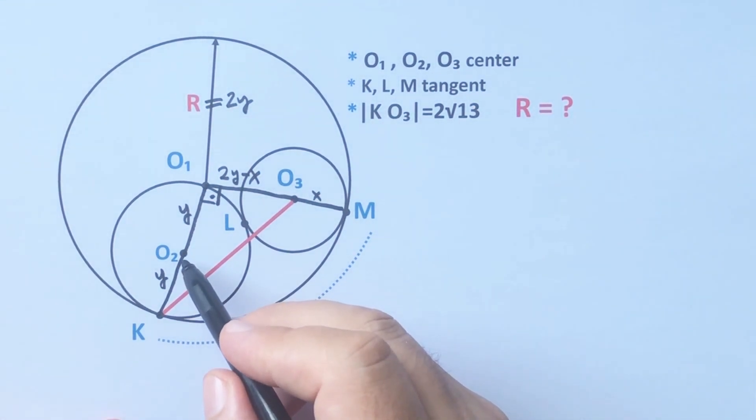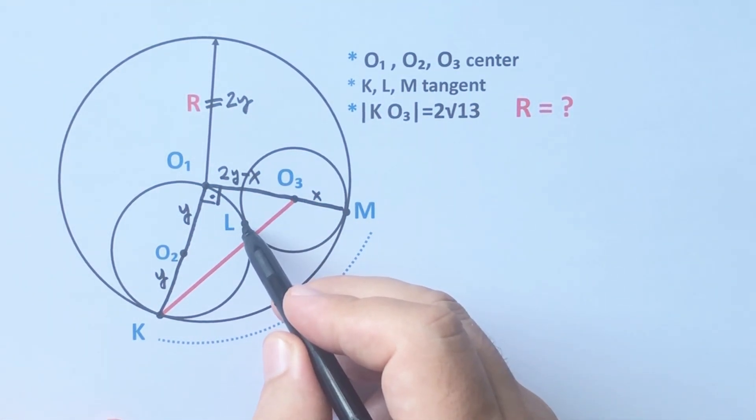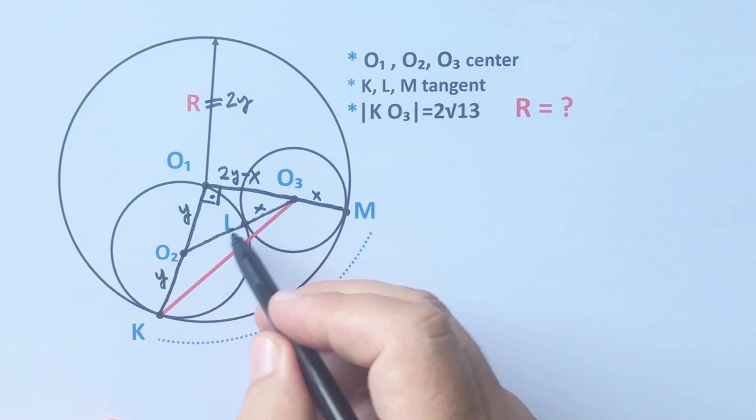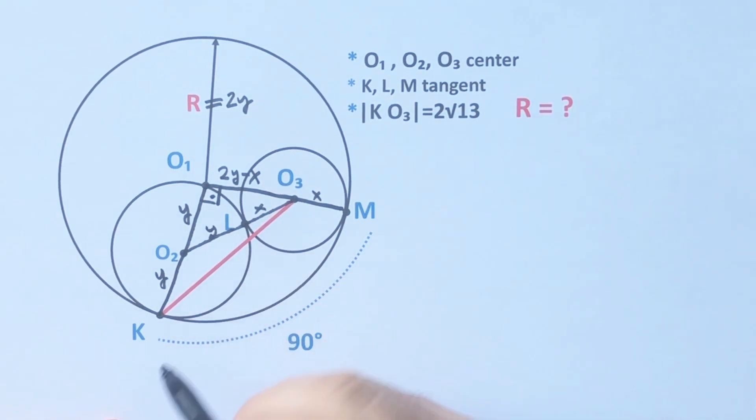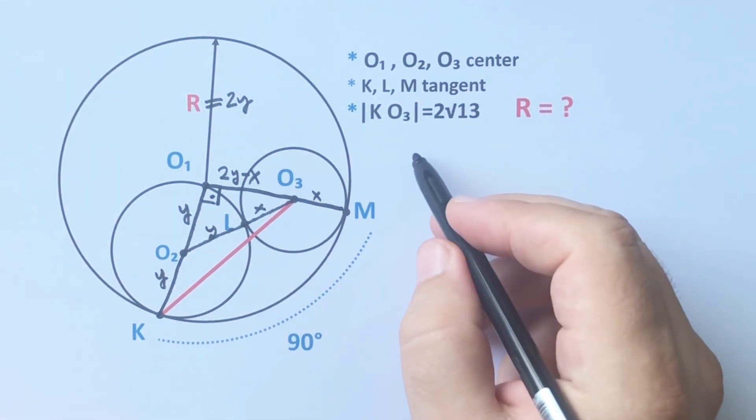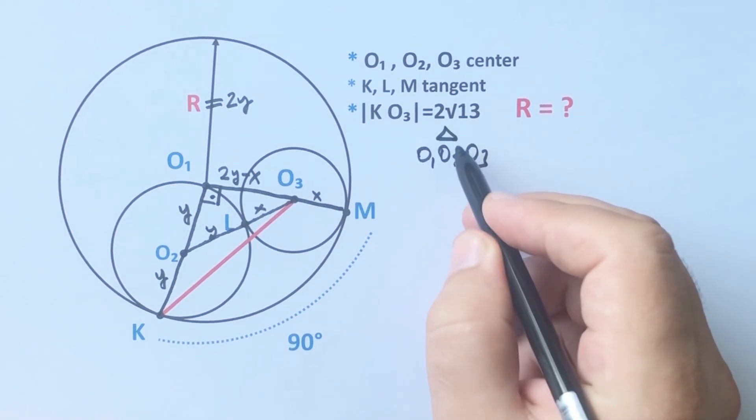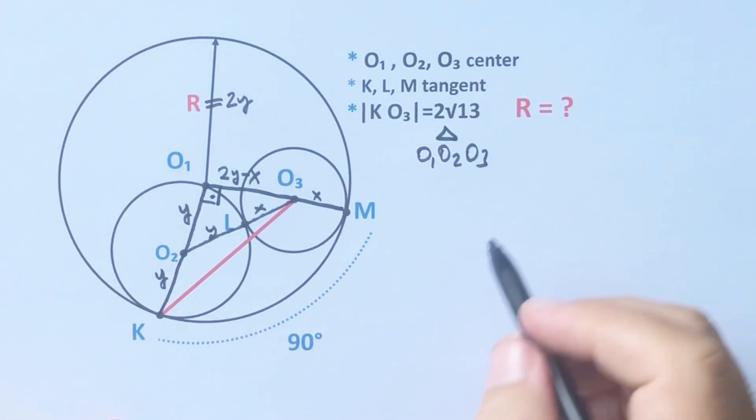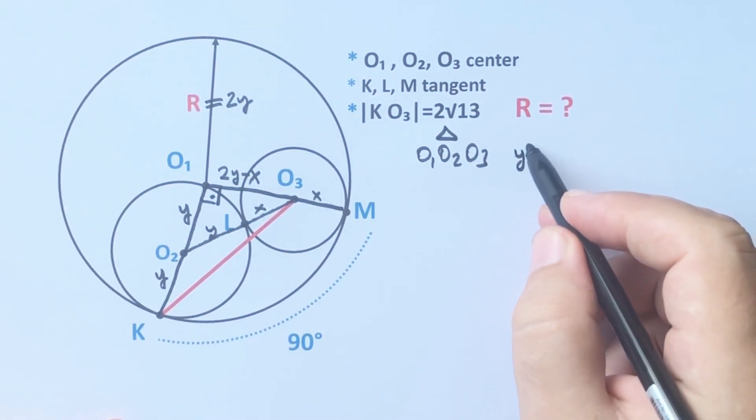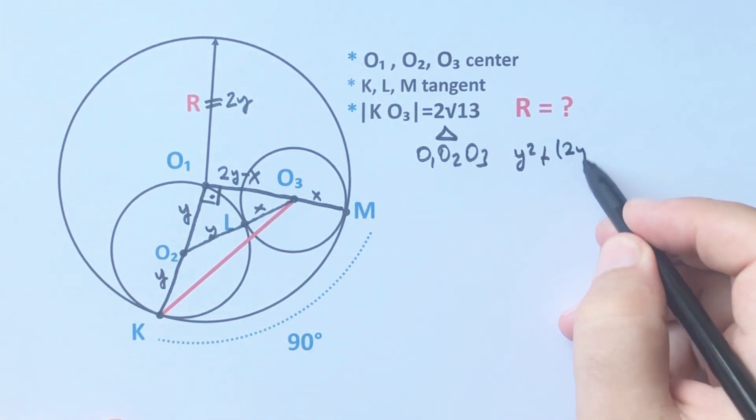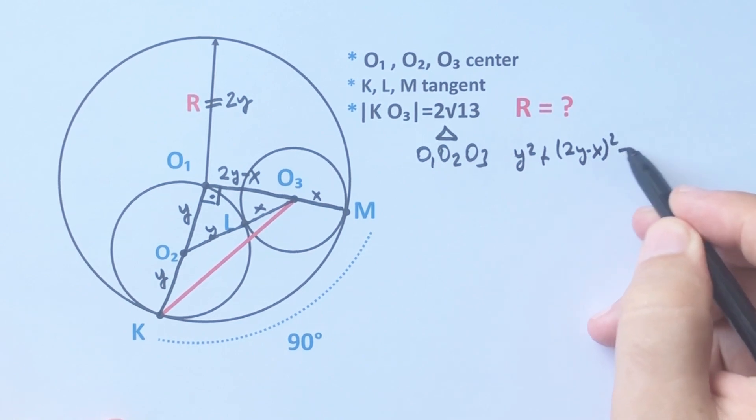If we connect here, this length is x and here must be y units. For this triangle, if we apply the Pythagorean theorem: y² plus (2y minus x) whole squared equals...